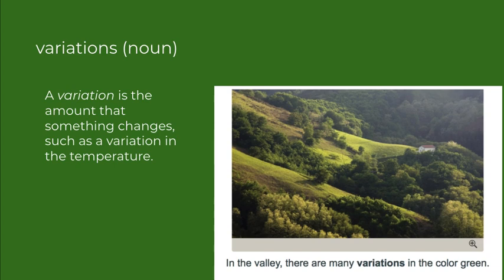The next word is variations, and that is a plural noun. A variation is the amount that something changes, such as a variation in temperature. This spring we have certainly had some variations in our temperature here in Kansas. In the valley, there are many variations in the color green — you can see some light green and some dark green.